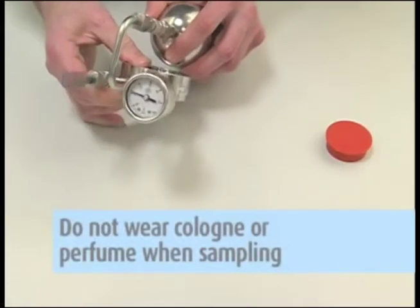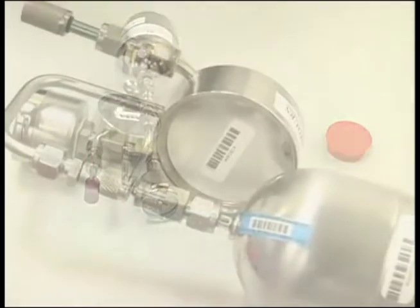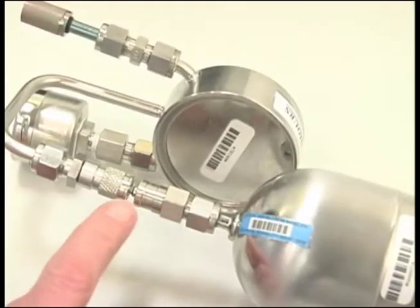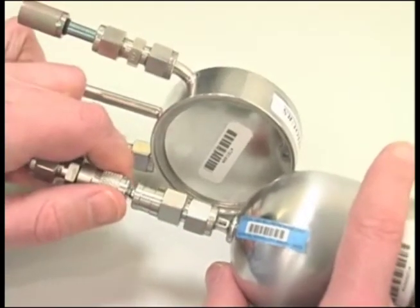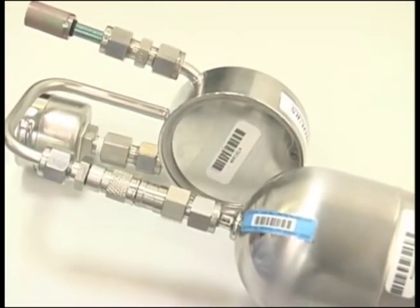Tips: Do not wear cologne or perfume when you perform the sampling. It could interfere with the sample results. Make sure there is no gap between the regulator and the can. If there is, the regulator is not seated and you will need to remove and reposition the regulator.